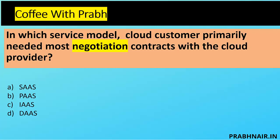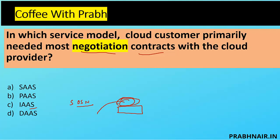Another tricky question: in which service model does the cloud customer primarily need the most negotiation in the contract with the cloud provider? With IaaS we need negotiation, but we have more visibility — we have control over the system, OS, and network. With PaaS we deploy applications on the cloud, so we have control over the application and still need contract negotiation. But the most important negotiation is required in SaaS, because everything is developed by the cloud provider.